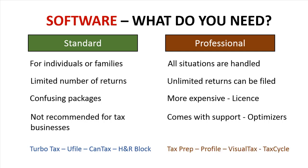For professional software, the two biggest right now are TaxPrep and Profile. If you're working at H&R Block, Softron, or any accounting firm or professional tax preparer, chances are 60–70% of them are using either TaxPrep or Profile. Visual Tax is another significant one, and TaxCycle is a newer program that's become very popular over the last couple of years — it may well become one of the big three. But for the most part, TaxPrep and Profile are used most often.